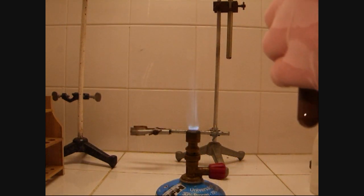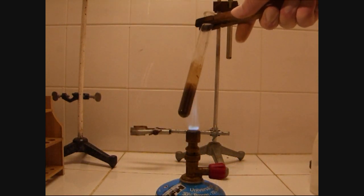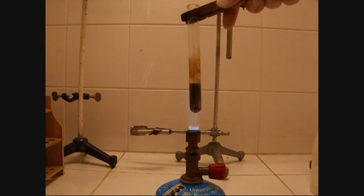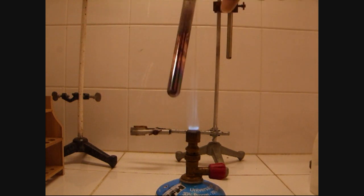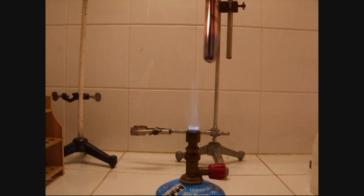Now to reduce the copper ions directly on the glass, the test tube is heated with a flame. The heat supports the reaction and slowly a clear copper mirror settles down on the glass.